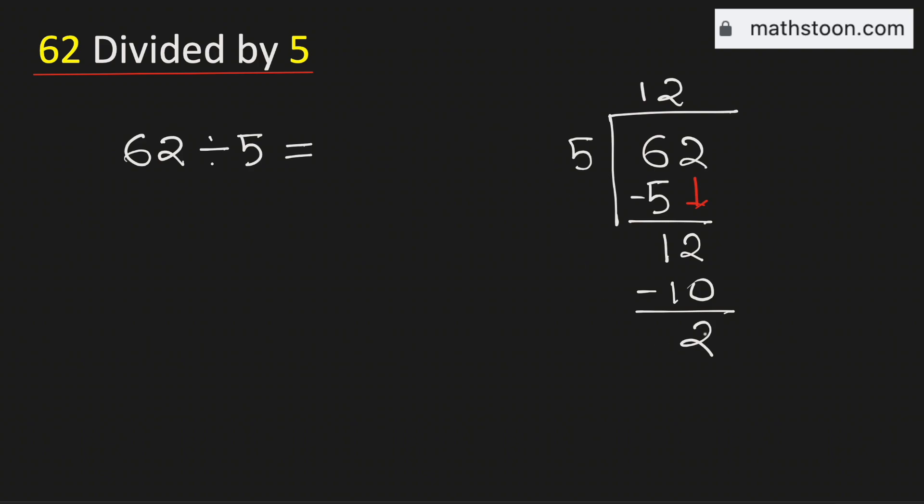As 5 cannot go into 2, we need to put a decimal here so that we can get 10. Now 5 times 4 is 20. Now subtract, we get 0.